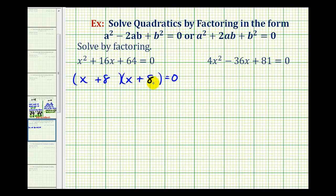Now because our binomial factors are the same, we could rewrite this as the quantity (x + 8)² = 0.